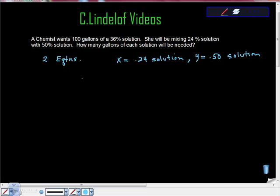Then we're going to say we know that here's our first equation. We know that the amount of 24% solution plus the amount of 50% solution has to equal a total of 100 gallons. So here's equation one.